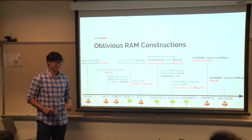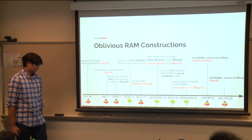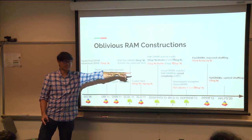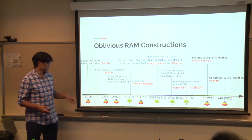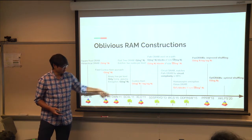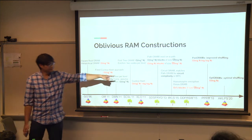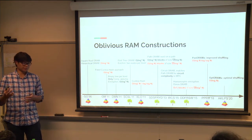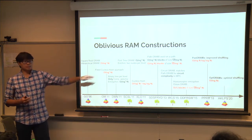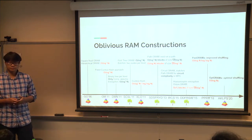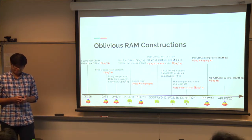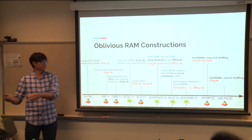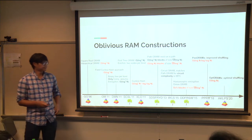For the array problem, the best construction achieves log n overhead — it was actually proposed in the 80s and it took almost 30 years to find that log n is optimal. Around 2011 there was a large increase of work in this area. So if a plaintext array access is one probe, compiling it into the oblivious world costs log n probes, where n is the size of the array.